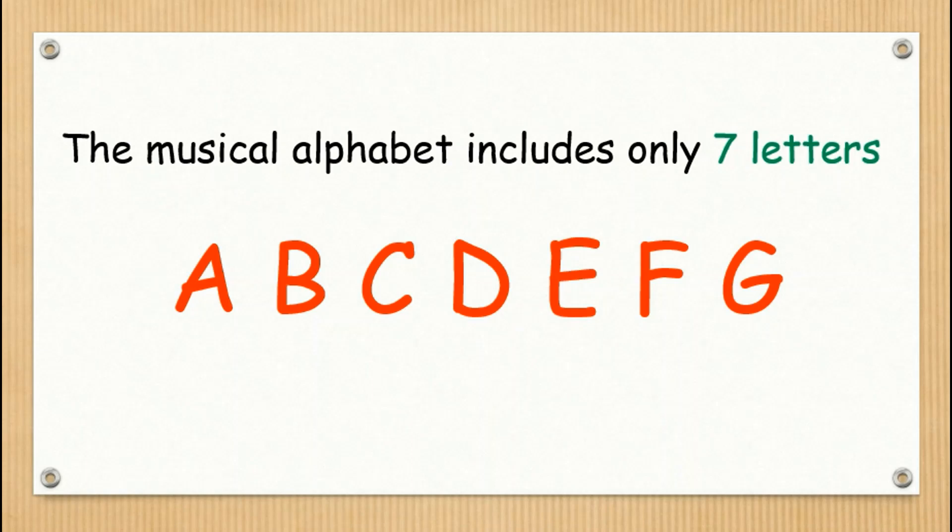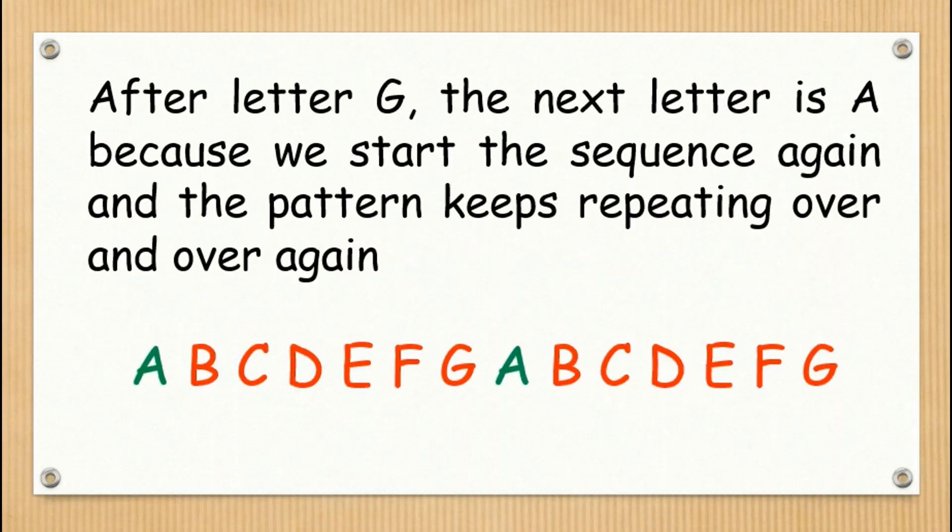The musical alphabet includes only 7 letters: A, B, C, D, E, F, and G. After letter G, the next letter is A because we start the sequence again and the pattern keeps repeating over and over again.